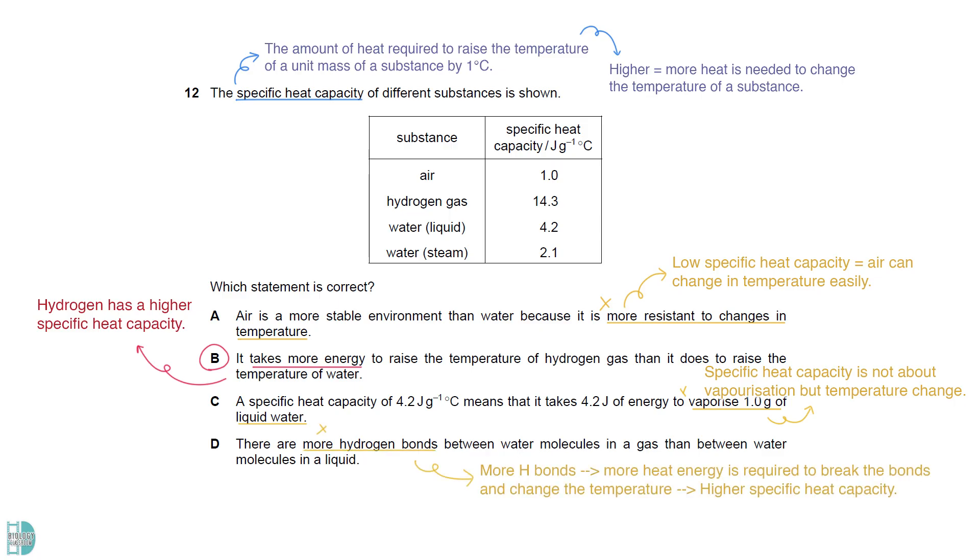C is not correct because it is not about vaporization but the temperature change. D is wrong because if there are more hydrogen bonds between water molecules in a gas, more heat energy is required to break the bonds and change the temperature. The specific heat capacity should be higher.